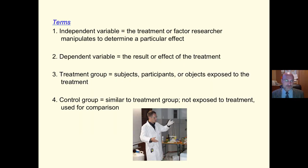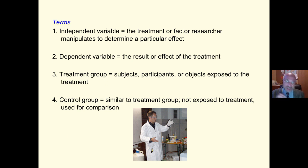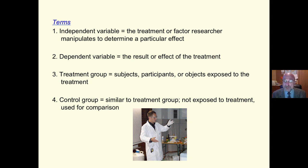That is an overview. The independent variable is the treatment or factor that the researcher manipulates to determine a particular effect — it is independent of anything else. The dependent variable is dependent on the treatment; it is the result or effect of that treatment. Treatment groups are the subjects or participants exposed to the treatment. A control group is similar to the treatment group but is not exposed to the treatment, and it is used for comparison.